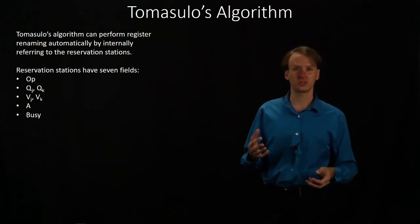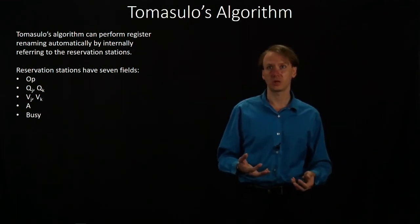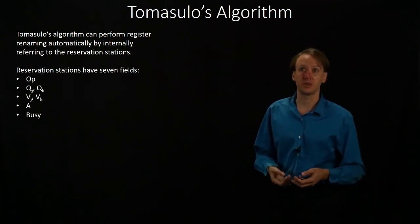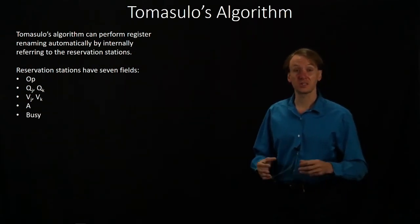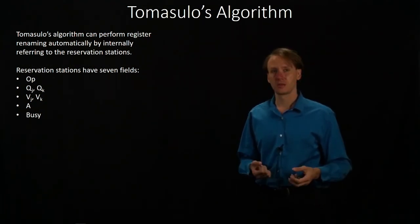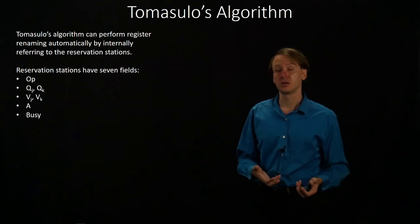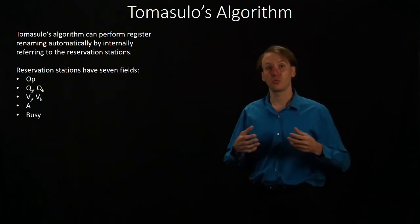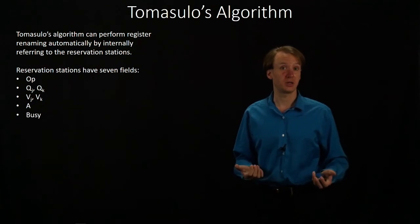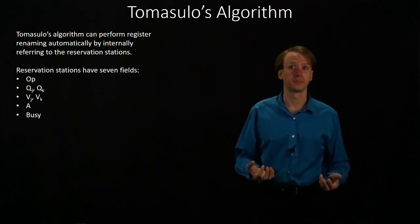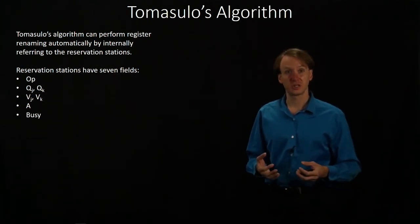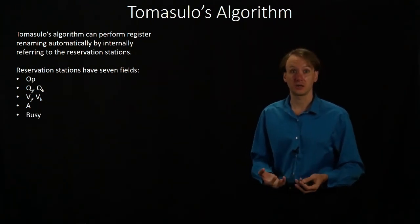Our reservation stations will have seven different fields that we'll be looking at. They'll have the operation you actually want to do, which goes in the op field. If you have the data available to you, it will go into VJ and VK. But if that data isn't available yet, you'll write down where you're going to get it from in either QJ or QK, depending on which piece you need. The A field is primarily used for address computation, and the busy field just tells us which instruction we're actually running this cycle.